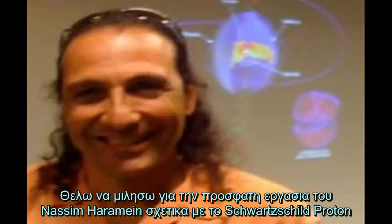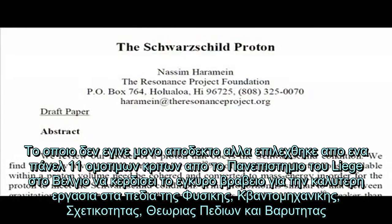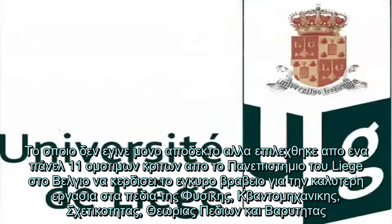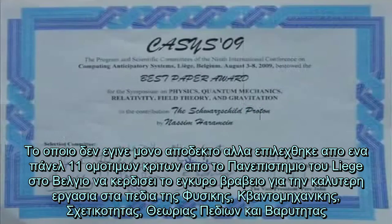I want to talk about Nassim Haramein's recent paper on the Schwarzschild proton, which was not only accepted, but chosen by a panel of 11 peer reviewers at the University of Liege in Belgium to win the prestigious Best Paper Award in the field of physics, quantum mechanics, relativity, field theory, and gravitation.